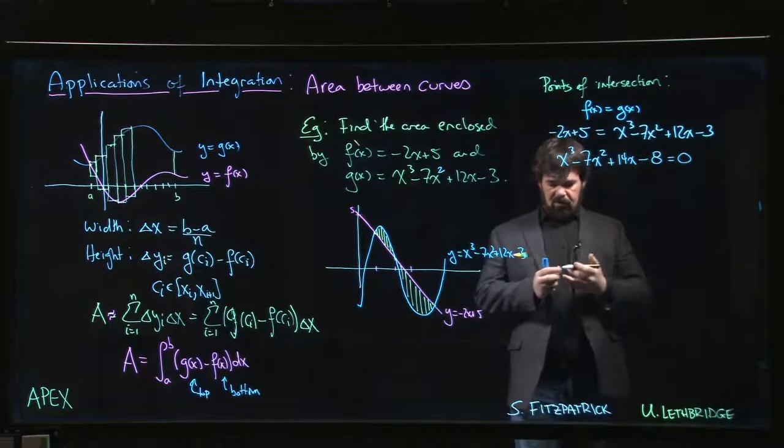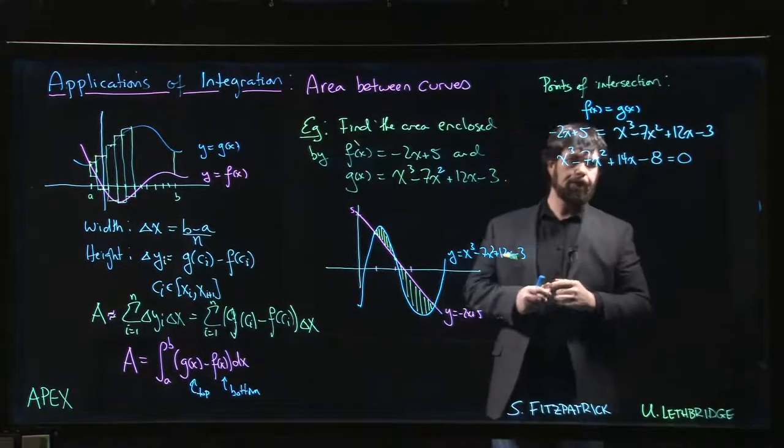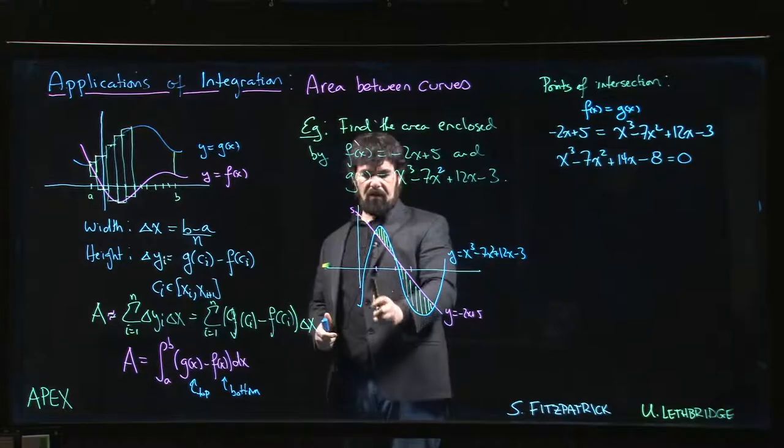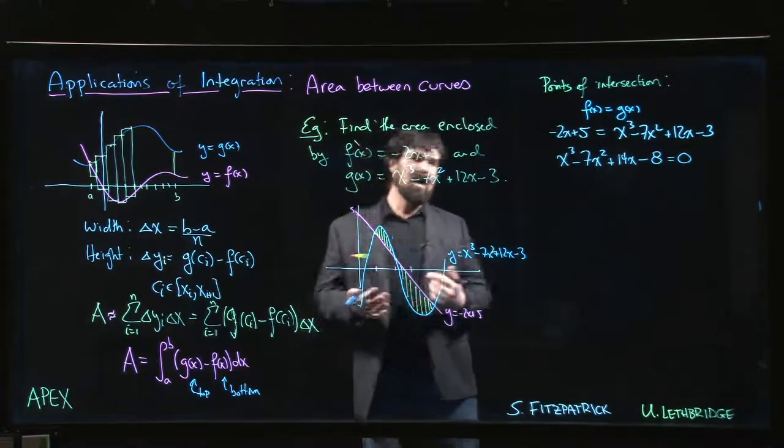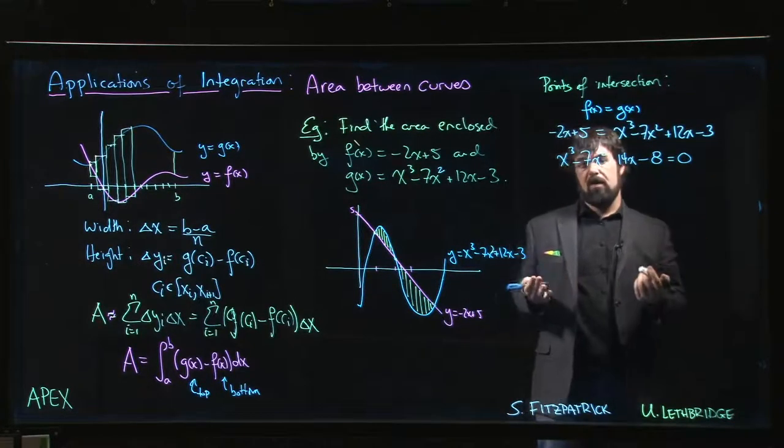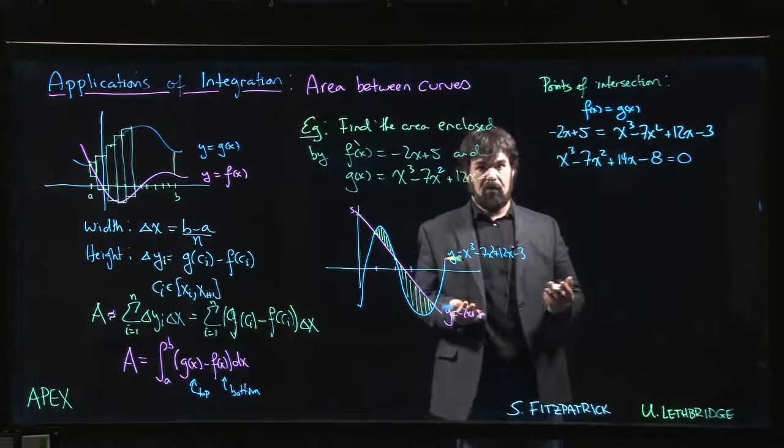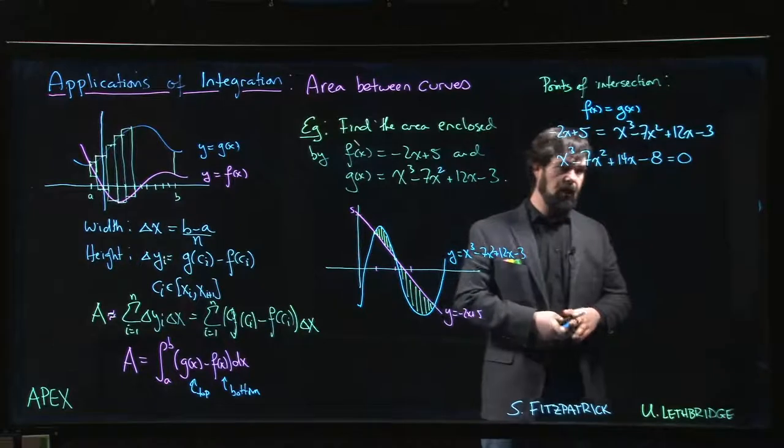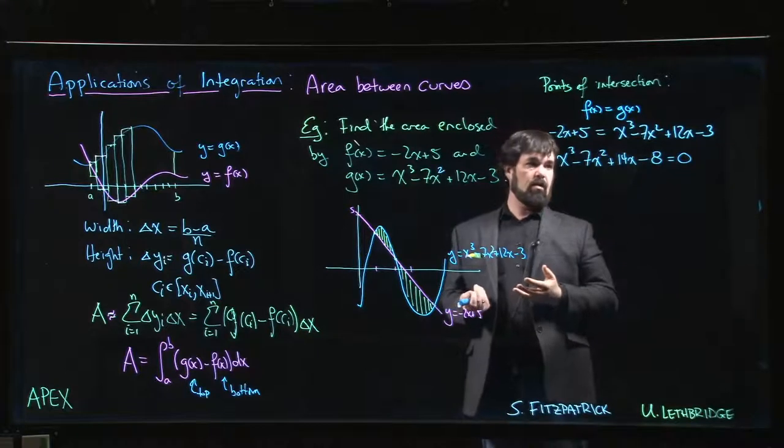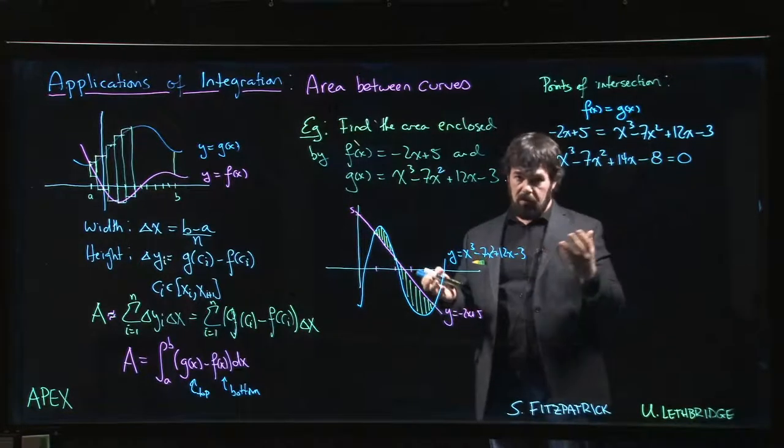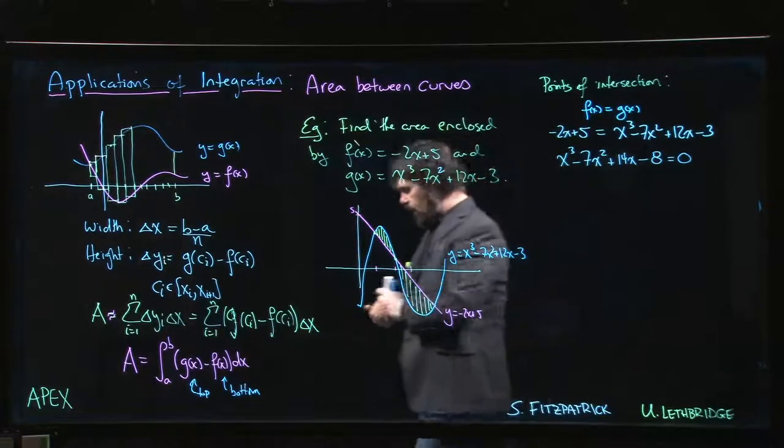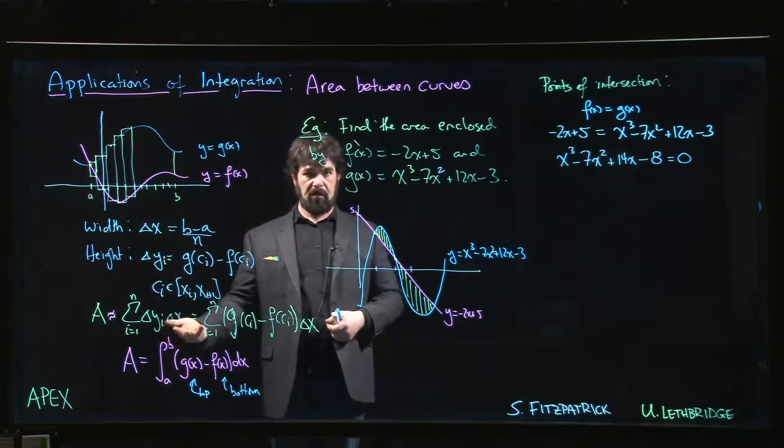You've got to factor a cubic, which is sometimes easier said than done. One of the ways you can do it is do a certain amount of guessing and checking. If you trust that your instructor has given you a reasonable problem where the points are going to be nice numbers, we know that if there's an integer solution to this polynomial, that integer has to be a factor of the constant term. This is the rational roots theorem. And so 8, the only possible factors for 8: plus or minus 1, plus or minus 2, plus or minus 4, plus or minus 8.